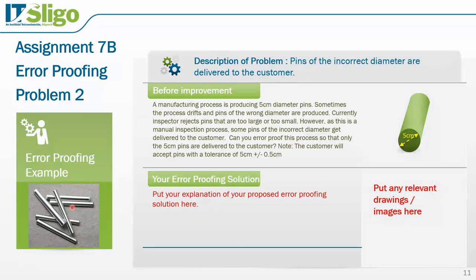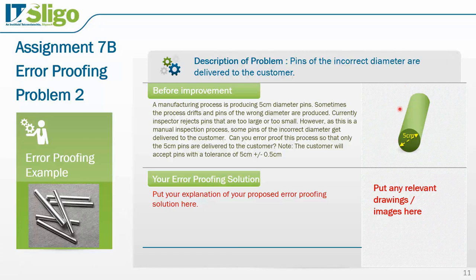Problem two: a manufacturing process is producing pins coming down a conveyor line. The operator has to check that the pins are not too large or too small, but sometimes pins of the incorrect diameter get delivered to the customer. Can you error proof the process so that only the right size pins are delivered to the customer?